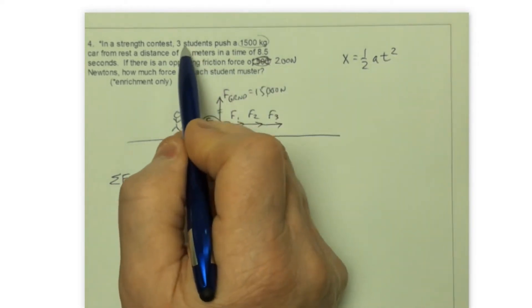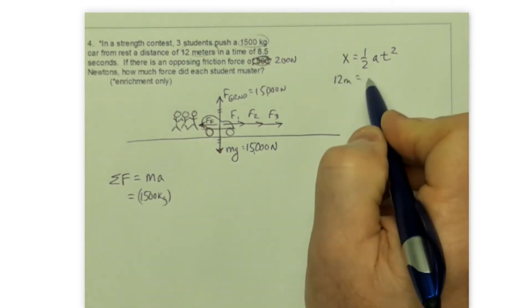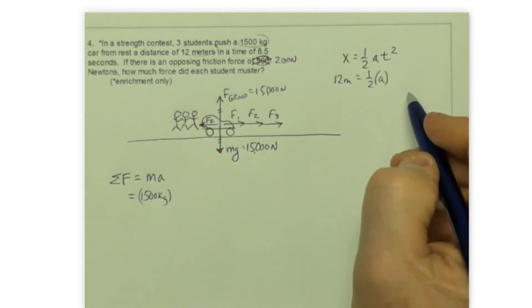So in this case here, we know the 12 meters is how far we moved that car. We are going to calculate the value for a and we measure that time to be eight and a half seconds.